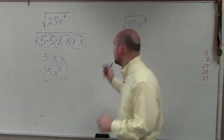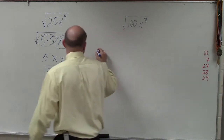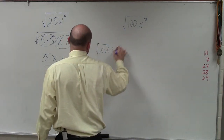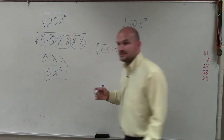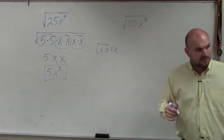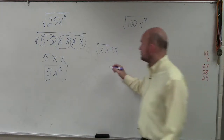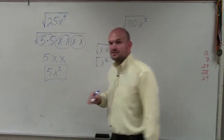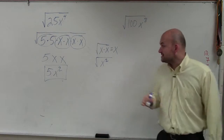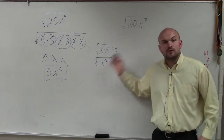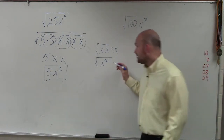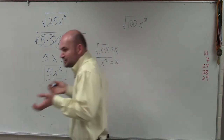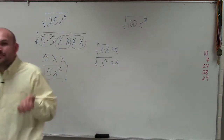I also want you guys to understand that the square root of x times x is equal to x. We can also rewrite this — instead of writing the x's separately, you can also represent them as the square root of x squared. The square root of x squared is also equal to x. It's just a different way to represent it.